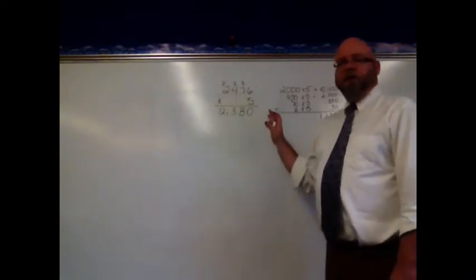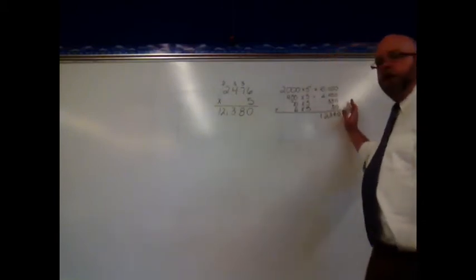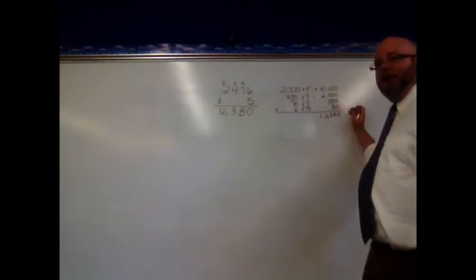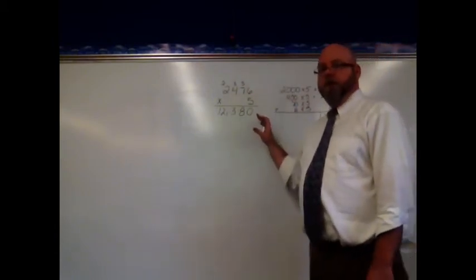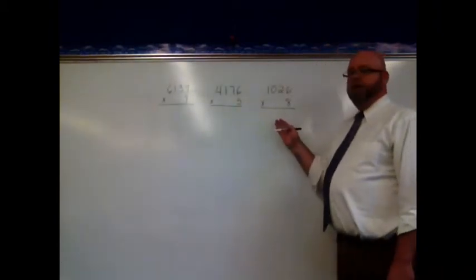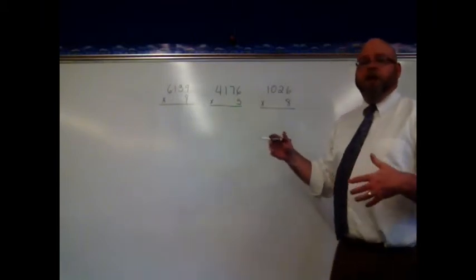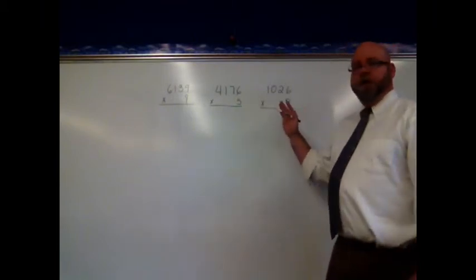Doing it by the standard algorithm is the quickest way most of us know how to do this. This is another way we can go back and check our work. And it's what's really happening when we multiply. Let's do 2 or 3 more just standard algorithm to get practice. Here we have 3 problems that we're going to solve standard algorithms. Standard way we multiply a 1 digit number by a larger number.